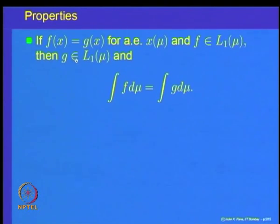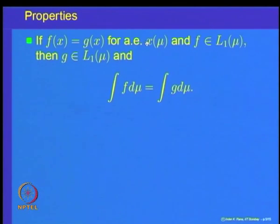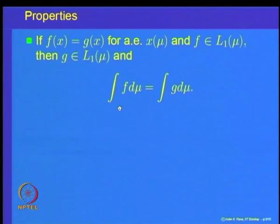We also proved that if two functions f and g are equal almost everywhere and one of them is integrable — say f is integrable — then g is also integrable and the integral of f equals the integral of g. This essentially says the integral does not change if the function's values are altered on a set of measure zero.